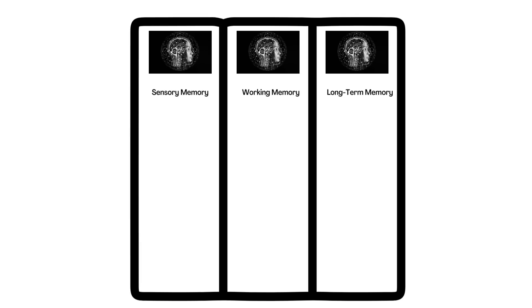Now, this audio shop is going to be interactive. So I'm going to need you to grab a sheet of paper and draw two lines so that you have three columns. Those columns will represent three stores — not the kind of stores that may have come to mind, but memory stores. Label the first column sensory memory, the second column working memory, and the third column long-term memory. By the end of this brief episode, you will understand how these three memory stores work together.